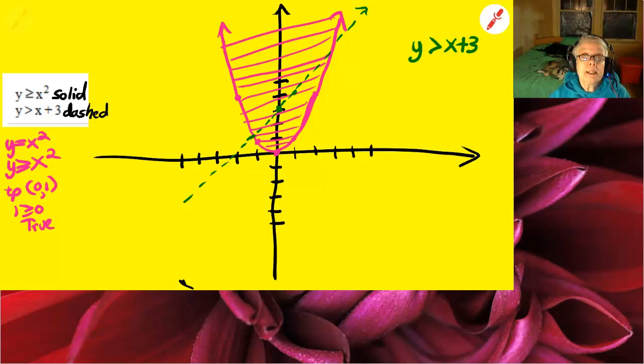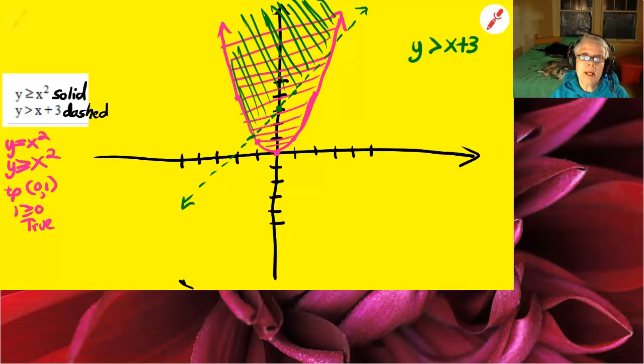Now because the inequality says y is greater than x plus 3, I know that I will graph up in the direction of greater than. And where the two colors overlap is my solution area.